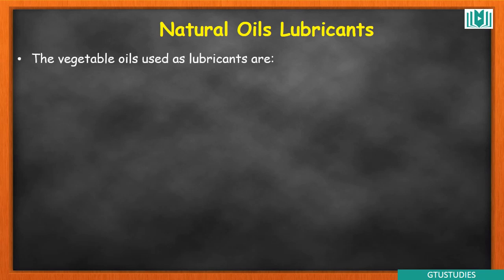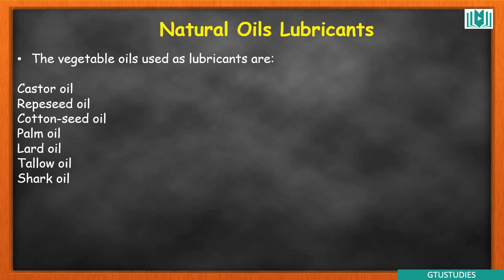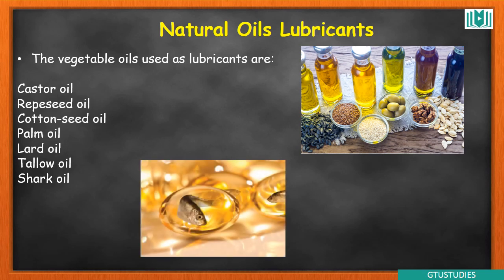We will cover each type in some detail, because if it is asked in an exam you should be able to explain it, and also in practical work you should know the particular application, advantages, and disadvantages. Natural oil lubricants are produced from vegetable and animal sources. Types include castor oil, rapeseed oil, cottonseed oil, palm oil, lard oil, tallow oil, and shark oil. The first four are vegetable oils; the last three are animal-derived oils. Shark oil comes from a type of fish.